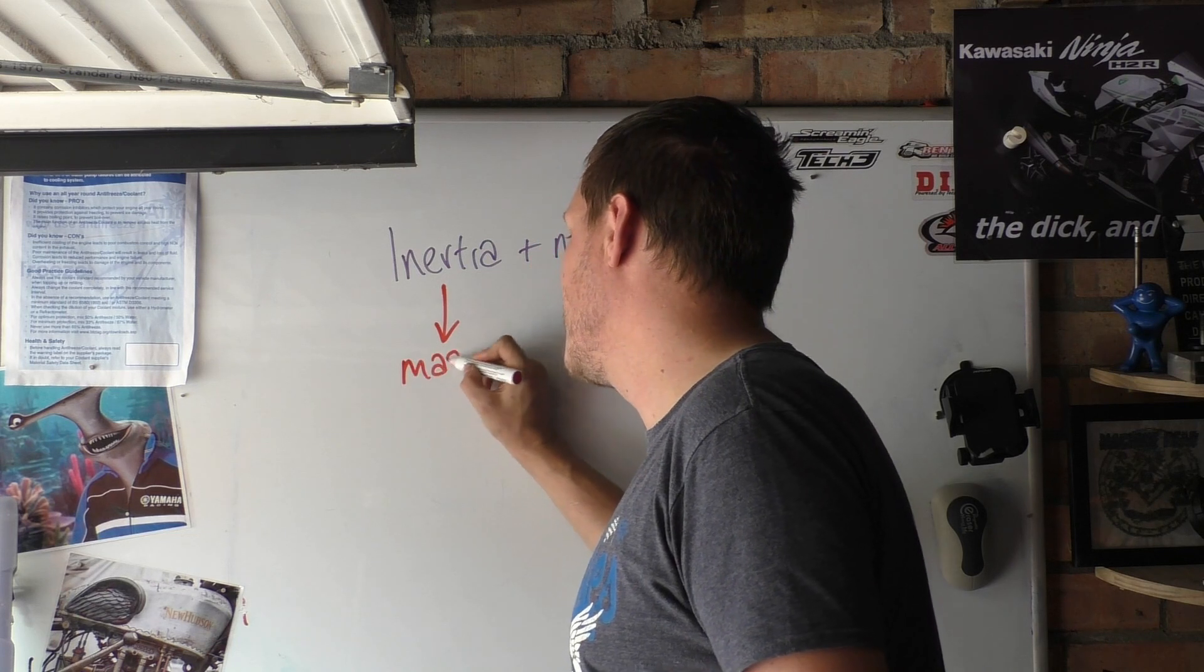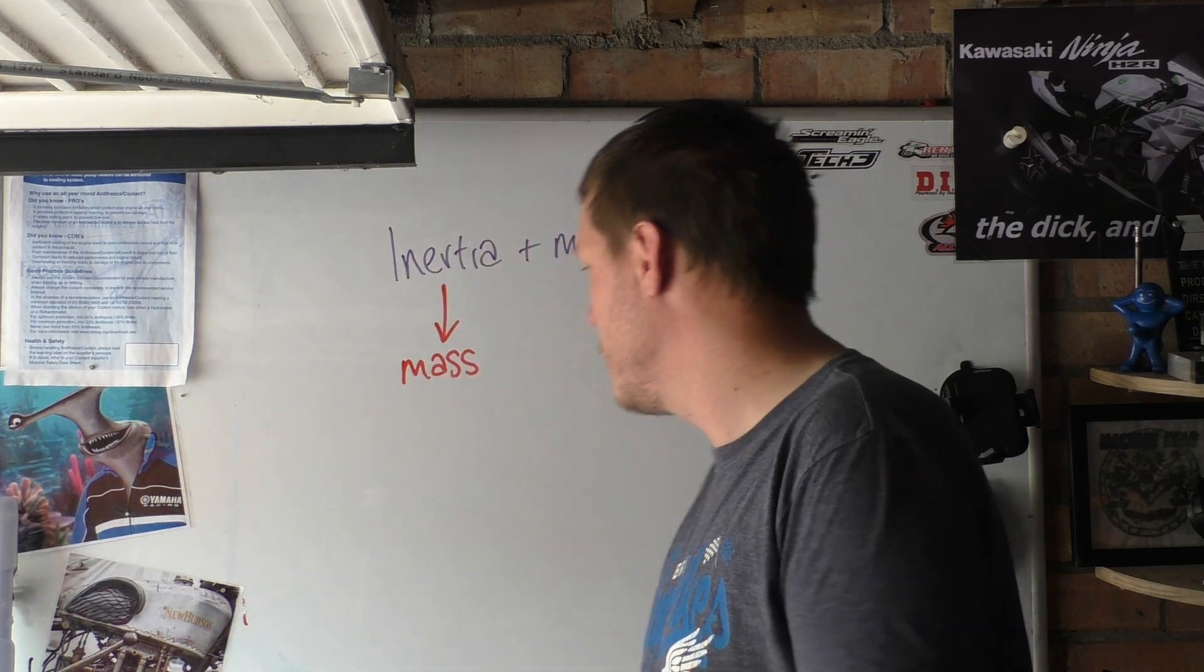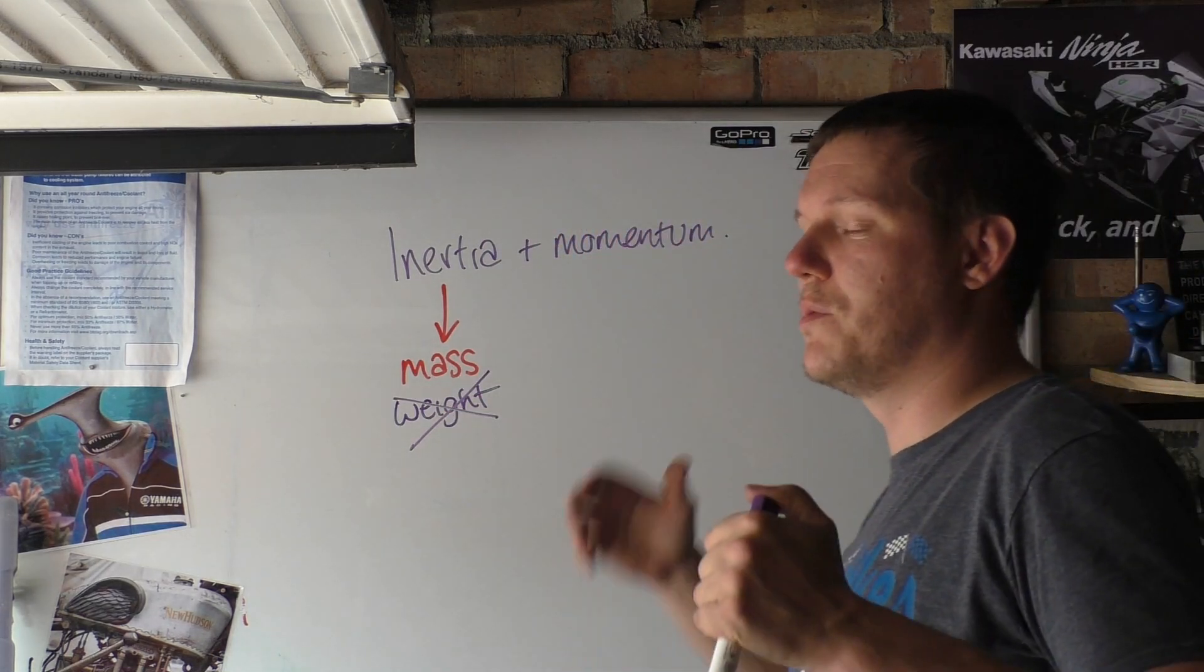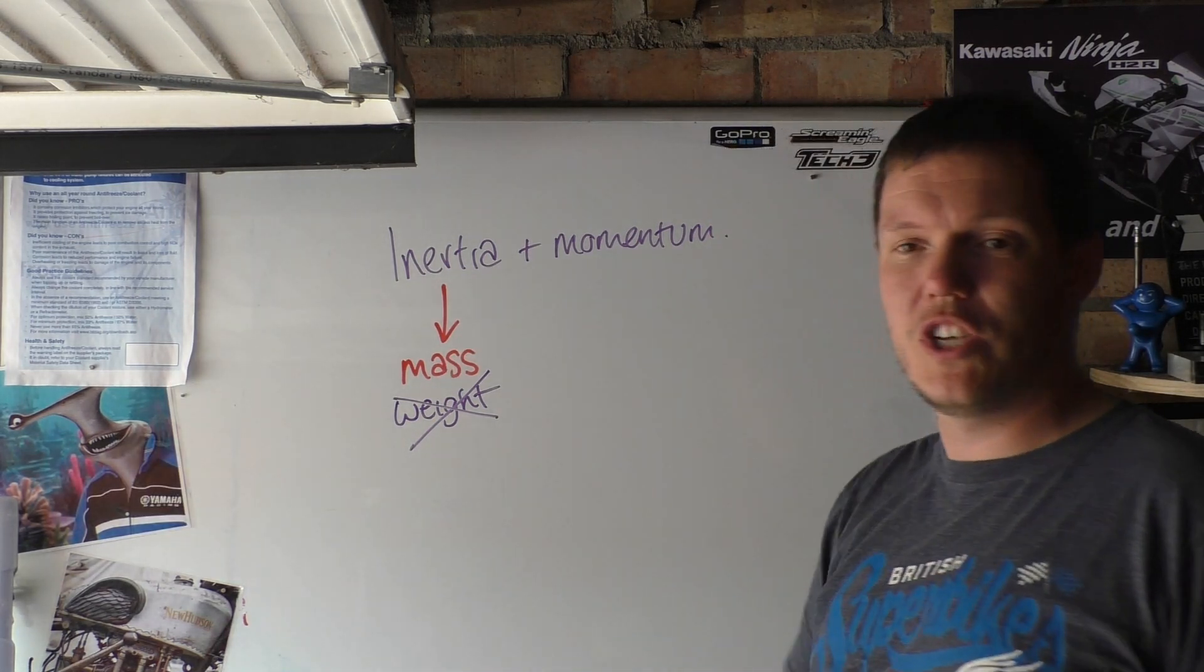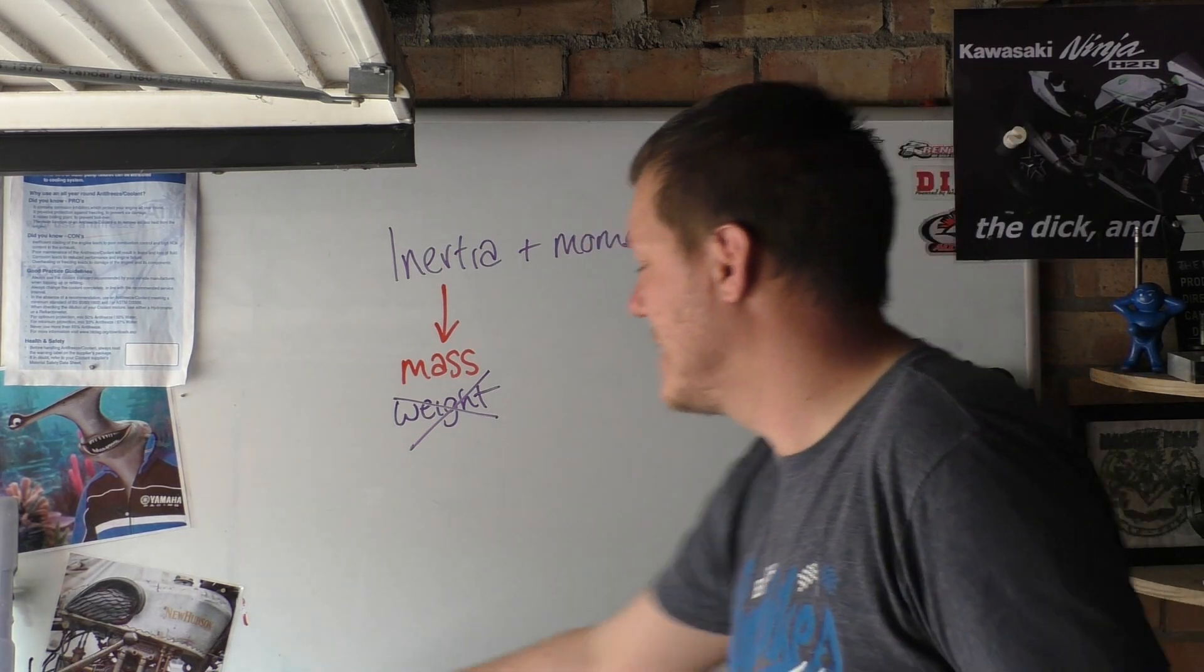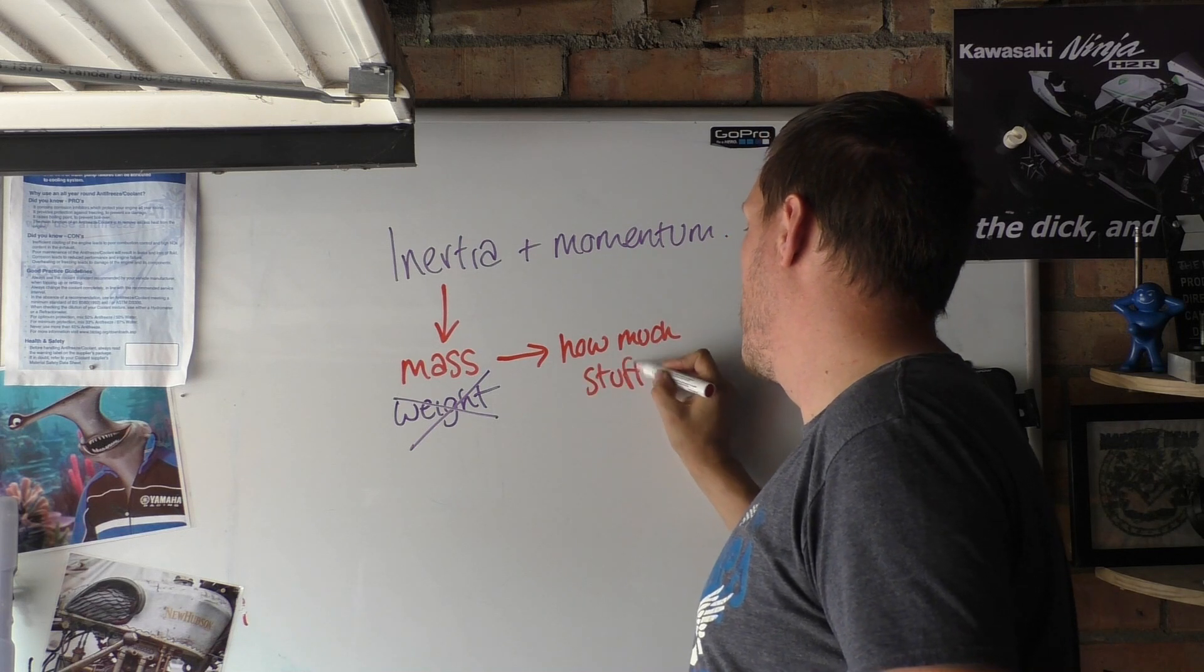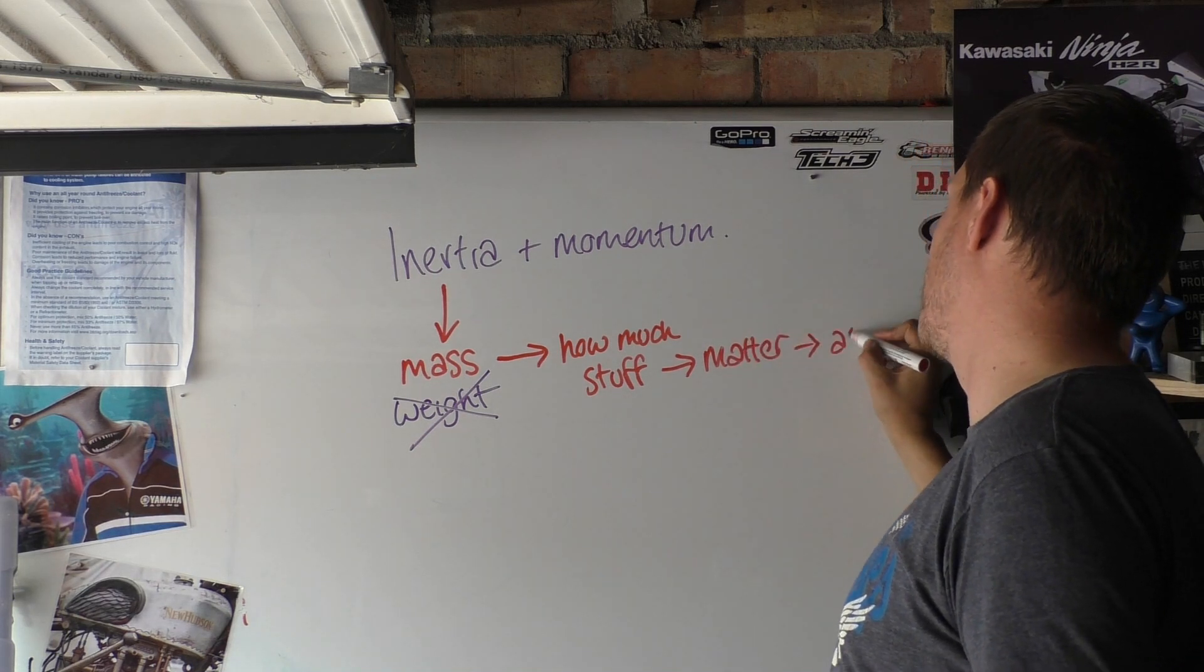Inertia we can basically say is mass, the mass of something. Now that is not weight. Weight is basically what you experience in a gravitational well. So on earth, on mars, on the moon, weight always changes where the mass of an object, unless you chop it in half, doesn't. So mass in a sense is how much stuff.